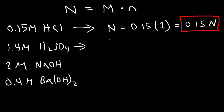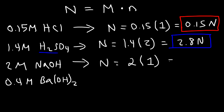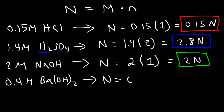For the third example, 2 molar sodium hydroxide: there is only one hydroxide ion per formula unit, so n is 1, giving a normality of 2 N. For the fourth example, 0.4 M barium hydroxide: there are two hydroxide ions per formula unit, so 0.4 times 2 is 0.8 N.